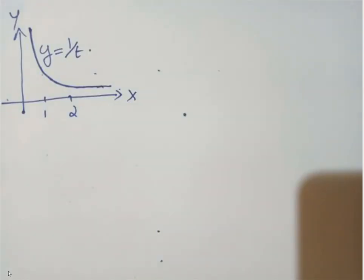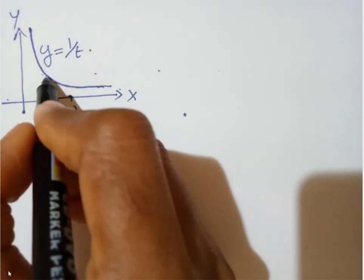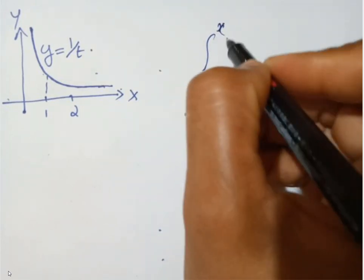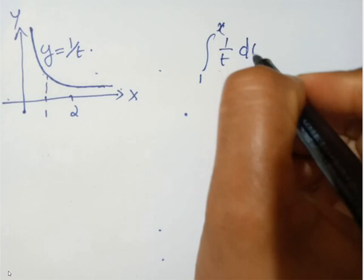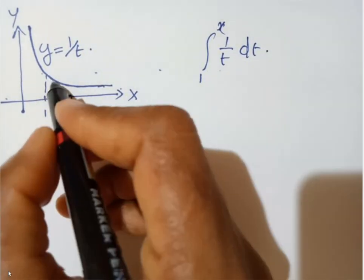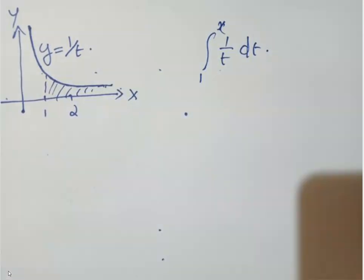The integral 1 to x, 1 by t dt, is also defined as the area under the curve from 1 to x. Geometrically, this is interpreted as the area under the curve of y equal to 1 by t.